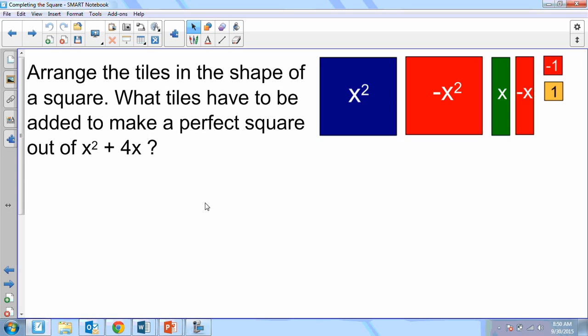Notice that you have blue tiles and red tiles and green tiles. Your blue tile is x by x. That's a positive x squared, the big blue one. When you flip it over, it becomes red. That would be a negative x squared.